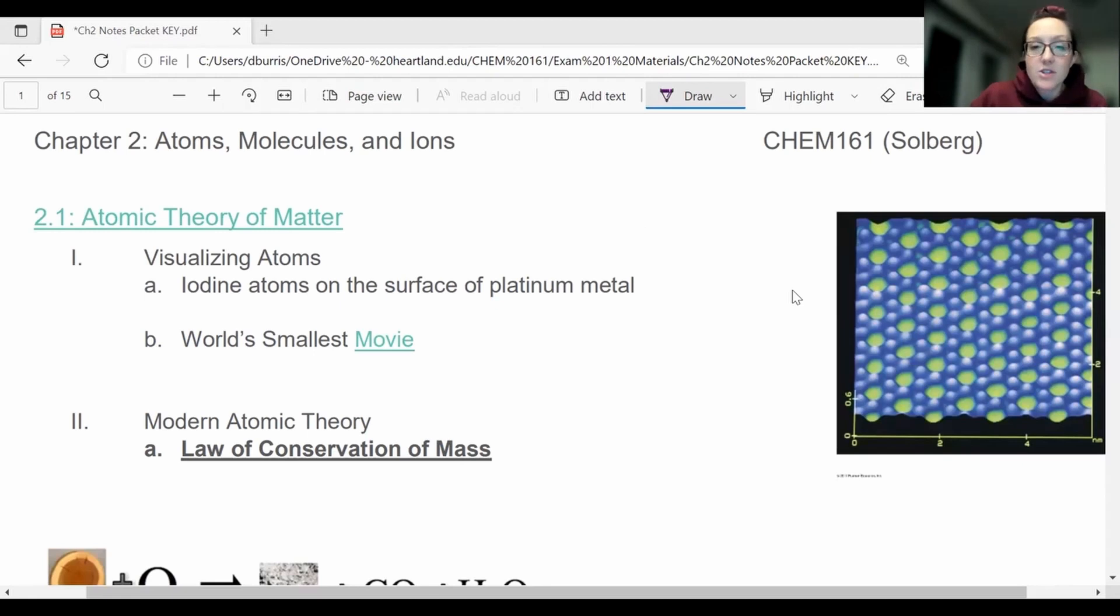So we have actually finally gotten to the level where we can see atoms. This is a very recent picture of iodine atoms on the surface of platinum metal. We got it using a technique called STM, or you might have heard of SEM, scanning electron microscope. This is scanning tunneling microscope.